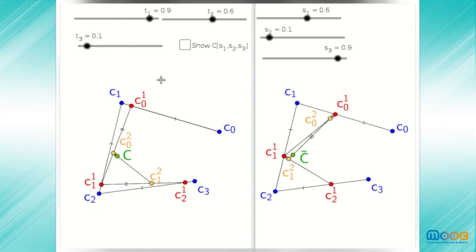Here we see the same control polygon represented twice. What's different on the left and right are the choices of the parameter values for the proportions. On the left, we see these parameter values as 0.9, 0.6, and 0.1. On the right, we see the same values but in a different order. The resulting points c, c tilde are indicated in green. And we can see that when we superimpose them both in the left image, they coincide.